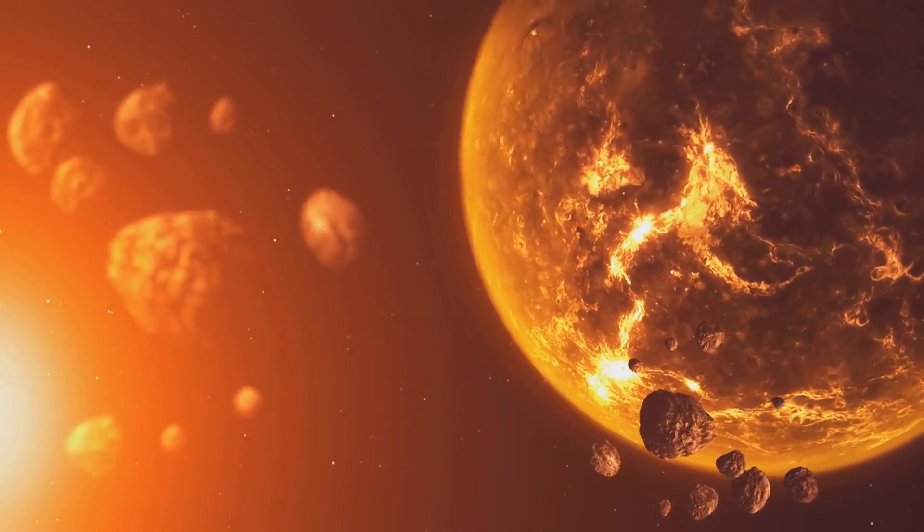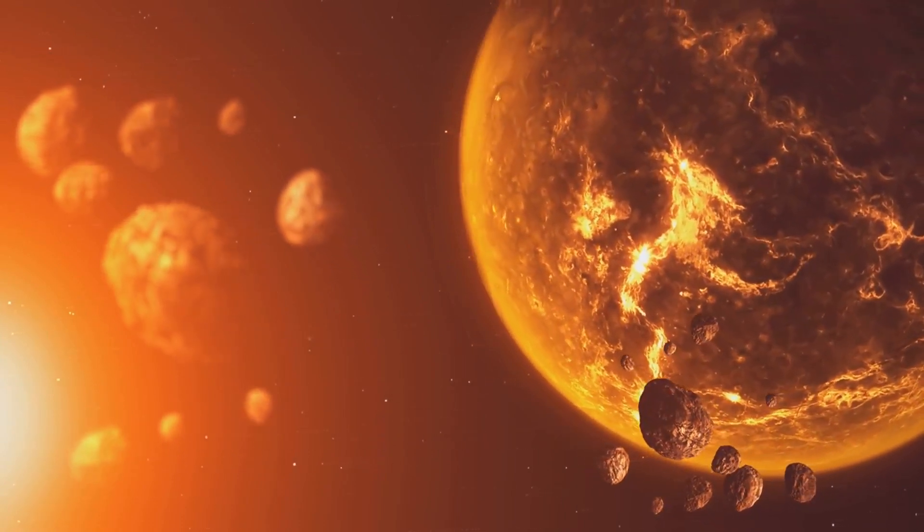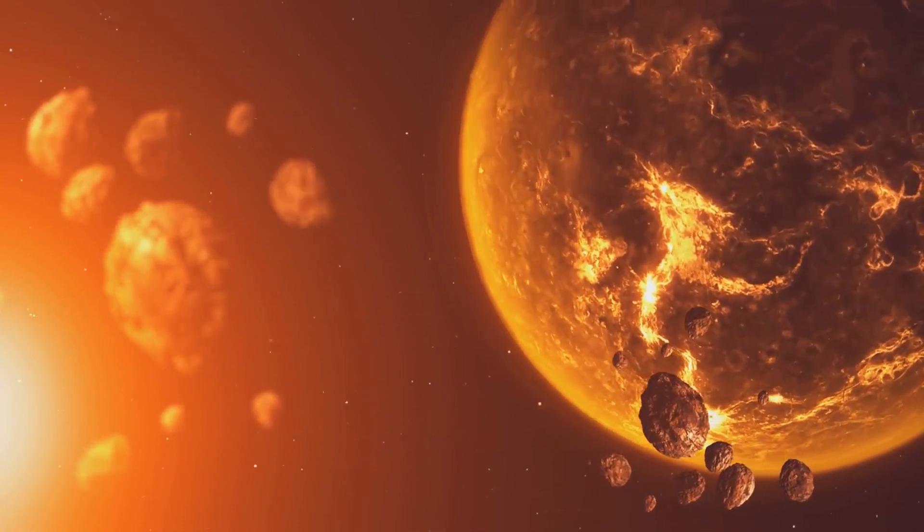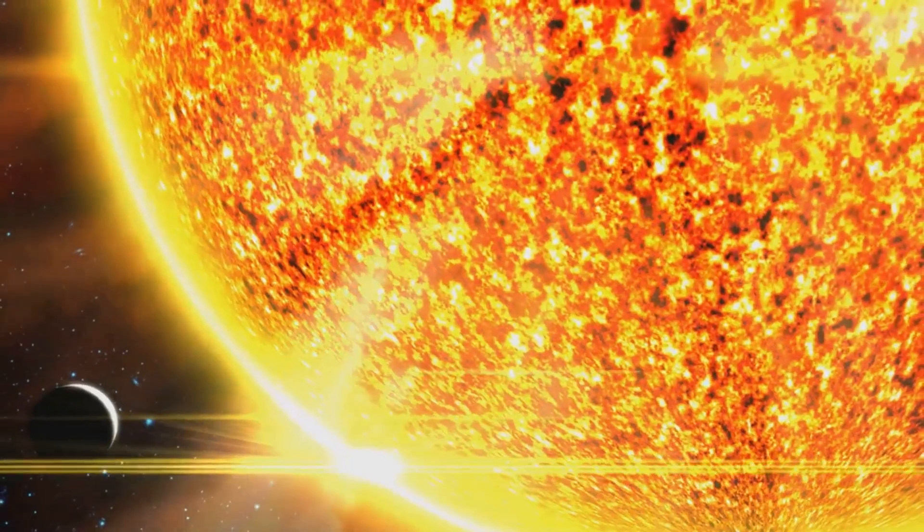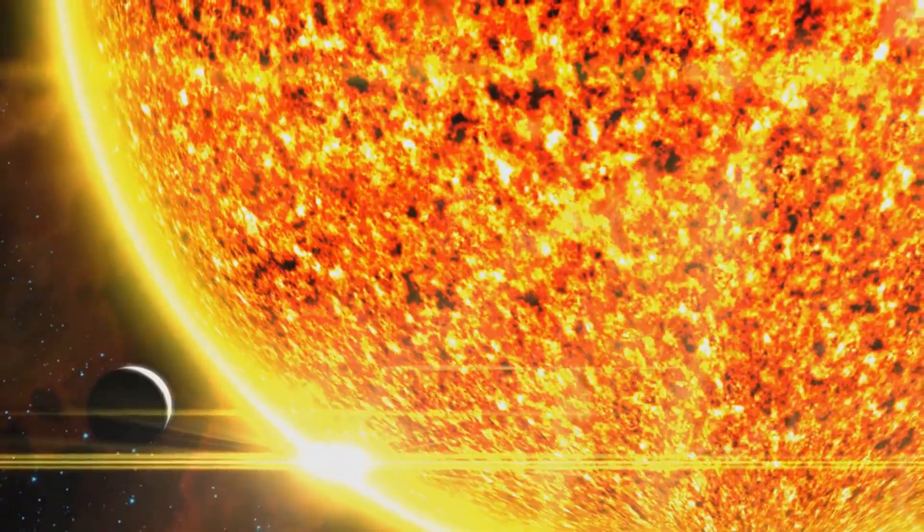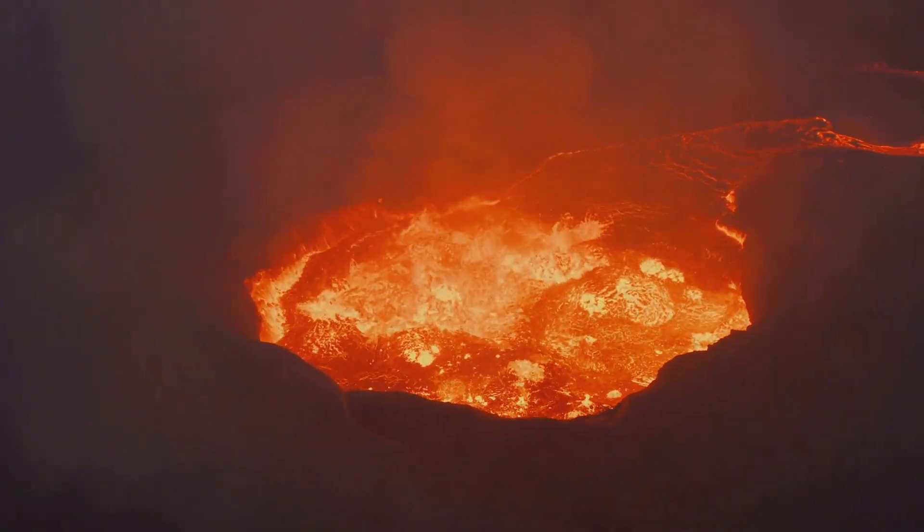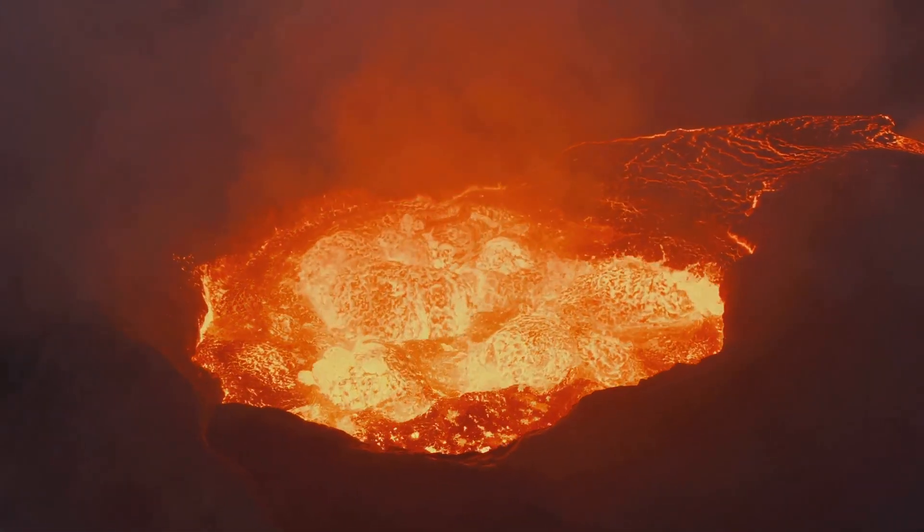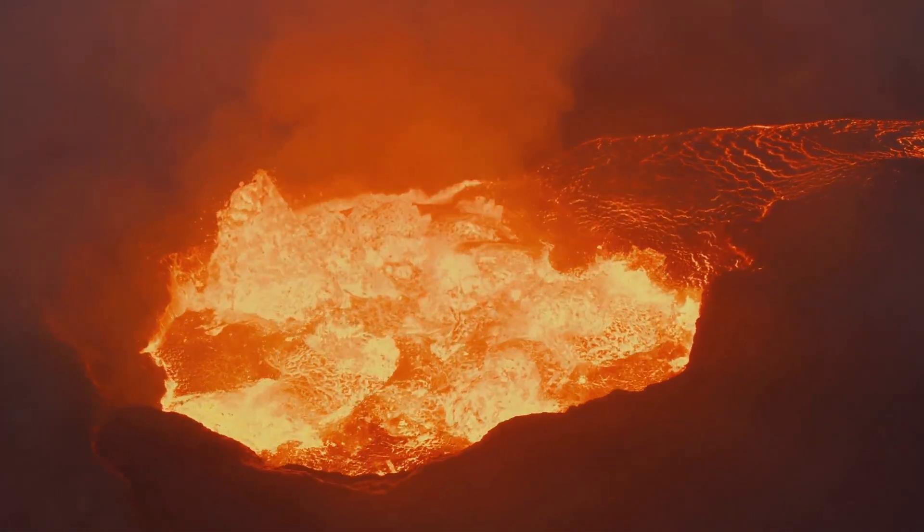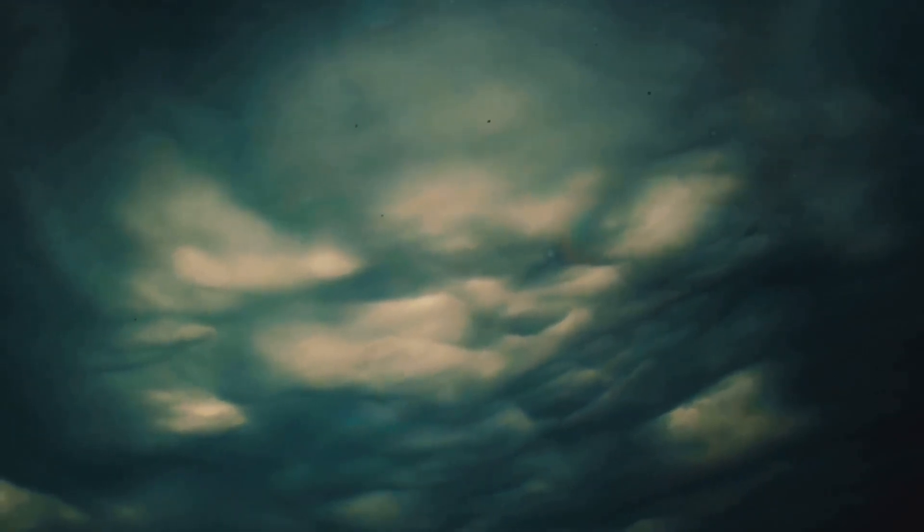In the chaotic early solar system, Earth was born from the relentless collision of planetesimals. These impacts generated immense heat, melting the young planet's surface. Earth became a fiery ball of molten rock and metal, a magma ocean glowing with intense heat.